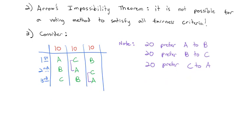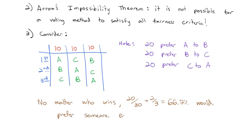In a nutshell, what this tells us is in this election that we've drawn up here, it turns out that no matter who wins, 20 out of 30, or two-thirds, or 66.7% would prefer someone else. If A wins this election, 20 would have preferred C. If B wins this election, 20 would have preferred A. And if C wins this election, 20 would have preferred B. There's no fair way to grant a winner in this election.